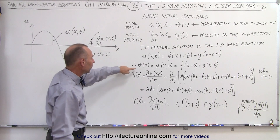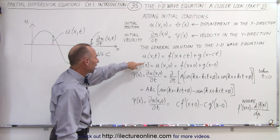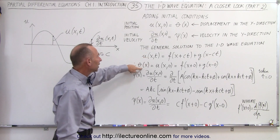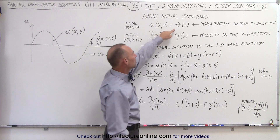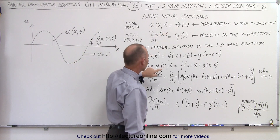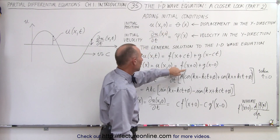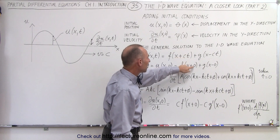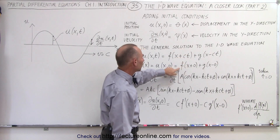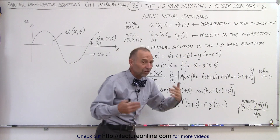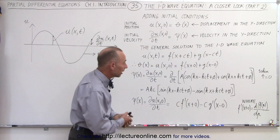If we solve that for t equals zero, then we get the initial condition. We simply replace t by zero, and this becomes f of x plus g of x, with t now being gone.